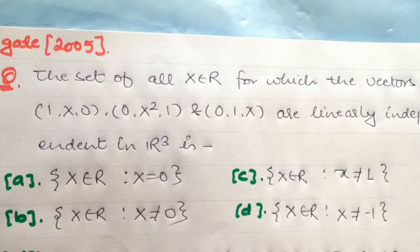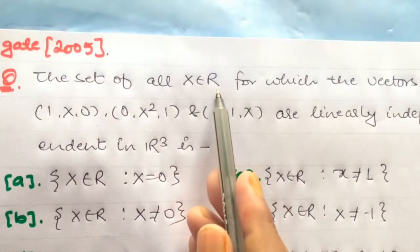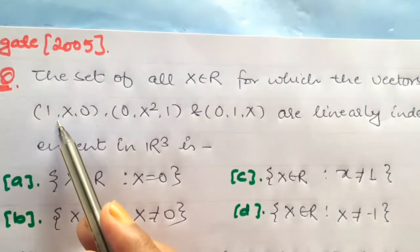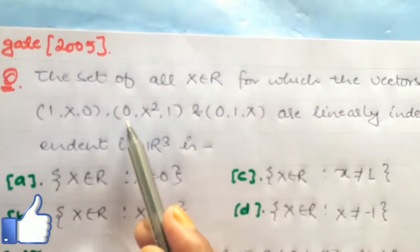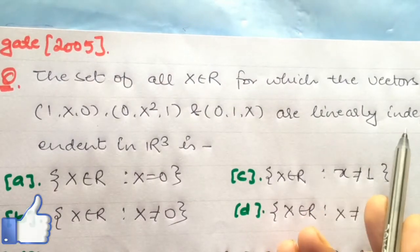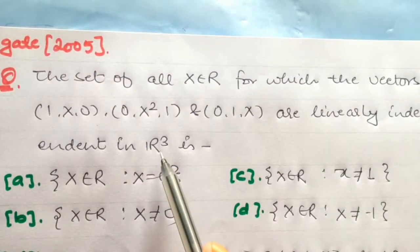The question is: the set of all x members which belong to the real numbers, for which the vectors (1, x, 0), (0, x², 1), and (0, 1, x) are linearly independent in R³.